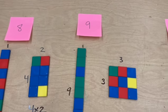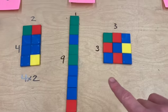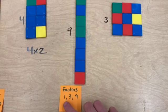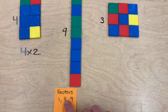For 9, we were able to make 2 different rectangles: 9 times 1 and 3 times 3. So the factors for 9 are 1, 3, and 9.